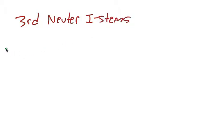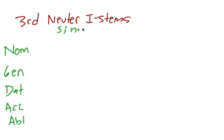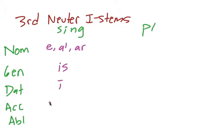Just like we did for third declension neuter, we're going to give the endings for each case: nominative, genitive, dative, accusative, and ablative, with singular and plural. The nominative varies, but there are actually three distinct endings: -e, -al, or -ar. Genitive is -is, dative -e, accusative same as nominative — so either -e, -al, or -ar. And then ablative is a long i. That's different from any other ending in third declension so far — usually third declension ablative singular is -e, but in neuter i-stems it changes to -i. Think of i like i-stem.